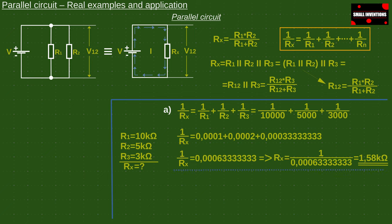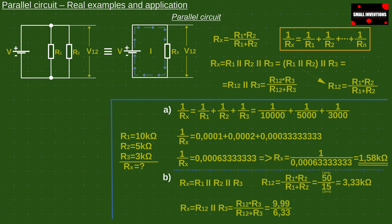If we calculate the total resistance in another way then we will first calculate the resistor R12. Then we include this value in the new equation and associate the resistor R3. The total resistance Rx is also 1.58 kilo ohms. So just pick which way you prefer and that is all.